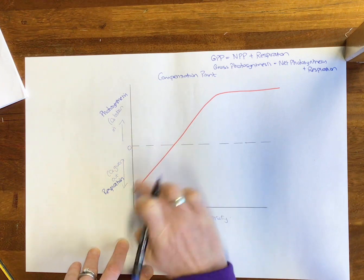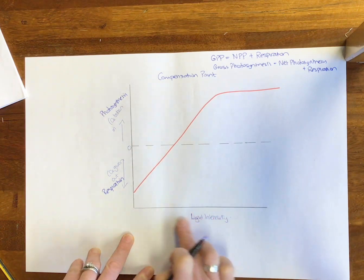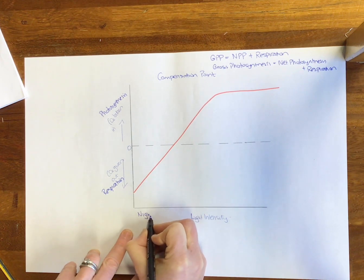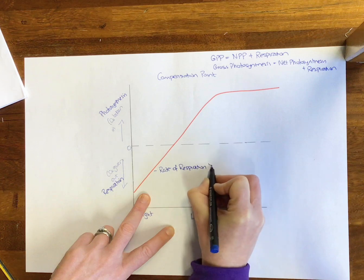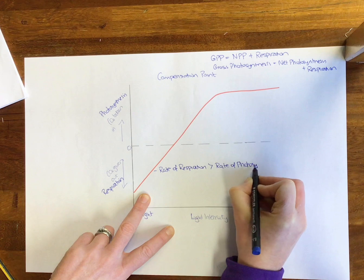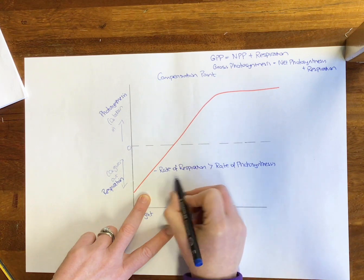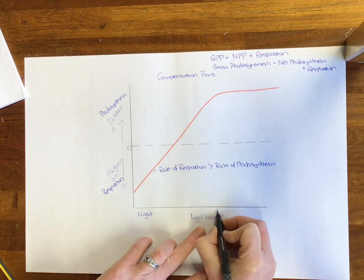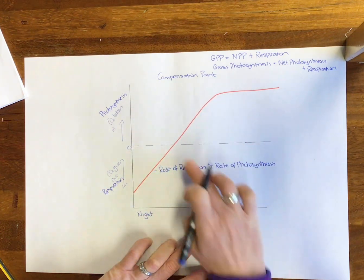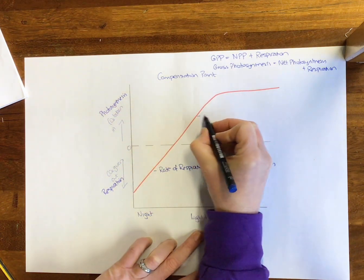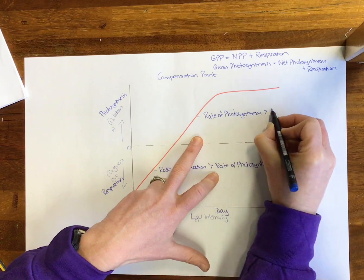In the first part of the graph, more carbon dioxide is being given out than taken in. This tells us that light intensity is low — so this is nighttime — and the rate of respiration is greater than the rate of photosynthesis. More respiration is happening, it's nighttime, more carbon dioxide is being given out, and no photosynthesis is occurring. During the daytime, at higher light intensity, photosynthesis is happening alongside respiration, and more carbon dioxide is being taken in. At this point, the rate of photosynthesis is greater than the rate of respiration.